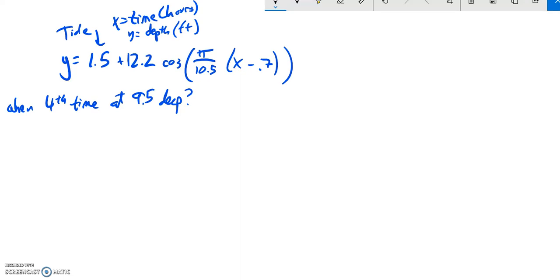Let me get a sketch of this real quick. So I know I have a center line at 1.5. I know it goes up at 12.2 from there, so it's going to max out up here at 13.7. And then it goes down 12.2, so if I go 1.5 minus 12.2, I'm down here at negative 10.7.